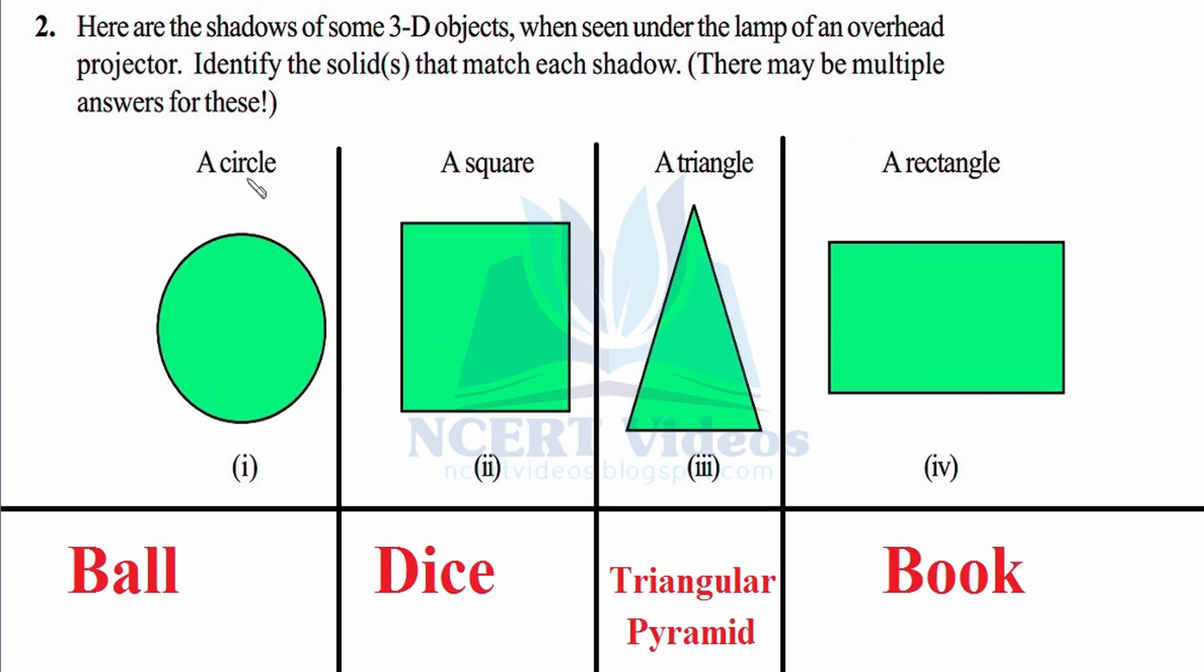This question is reverse of previous question. In this case we are given with the shadows and we have to name certain objects that form or cast these given shadows. So a circle, we just did in our previous question, that is a ball gives you a circular shadow. So ball, there may be other examples like compact disc and many more. So that was first.